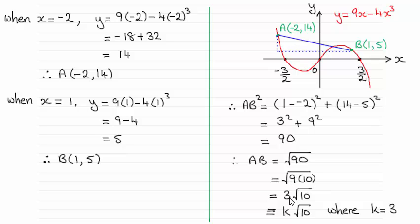We can square root 9, that gives us 3, and just leave it as root 10. So when you compare it to k root 10, you can see that the constant k is 3.